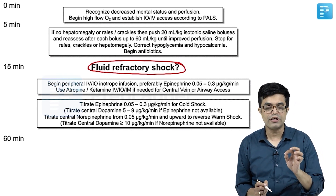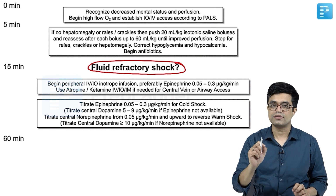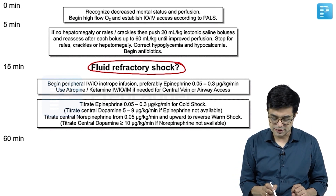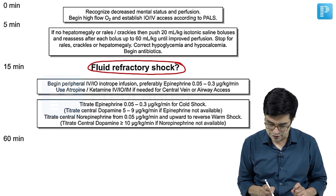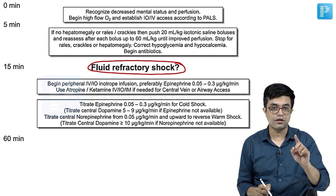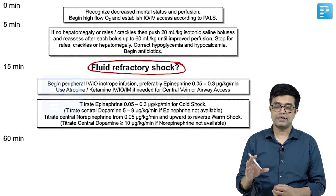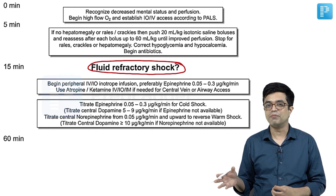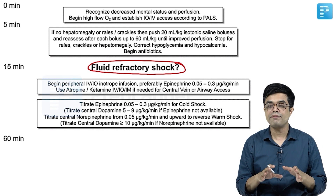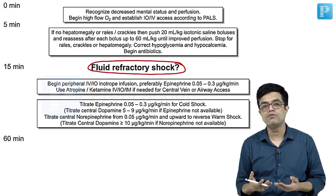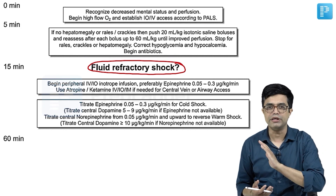Whenever you label a patient as having fluid refractory shock, you will begin catecholamines — vasoactive agents through IV or IO inotropic infusion. Historically, we used to start with dopamine initially and then move to epinephrine or norepinephrine. But now the guidelines are very clear that upfront epinephrine is better than dopamine — a position that has been strongly established in recent guidelines.